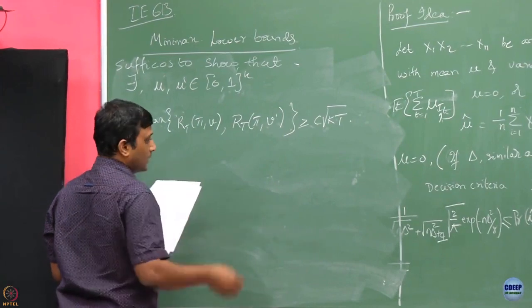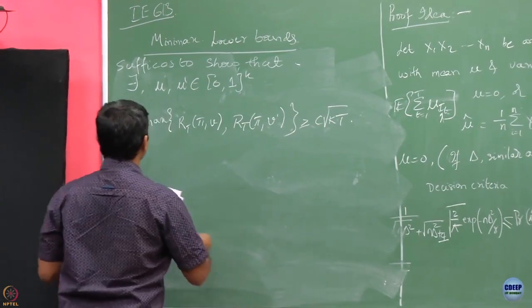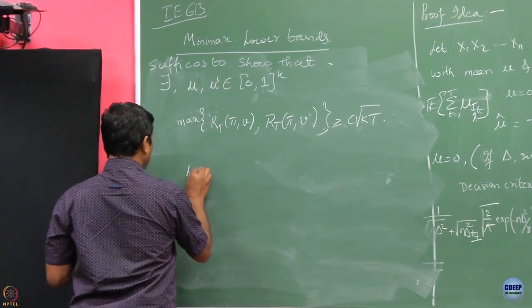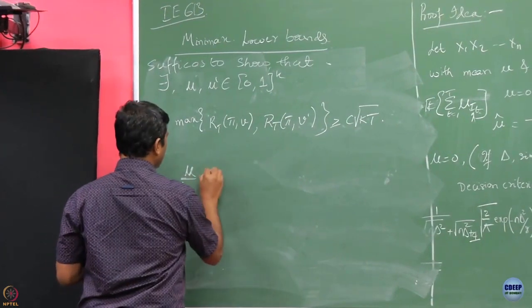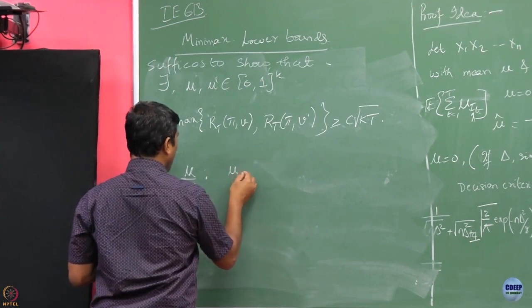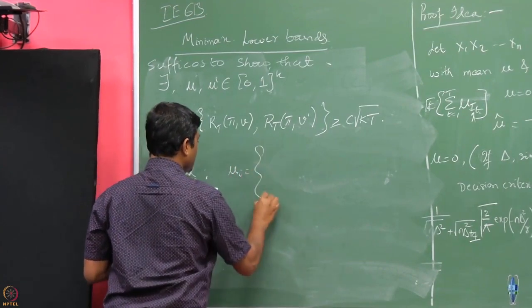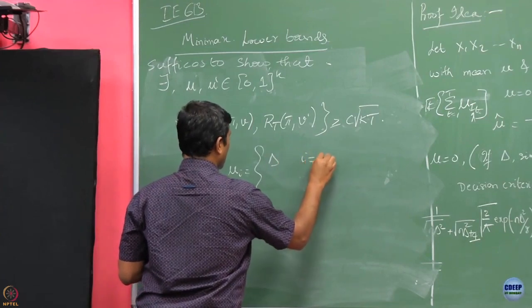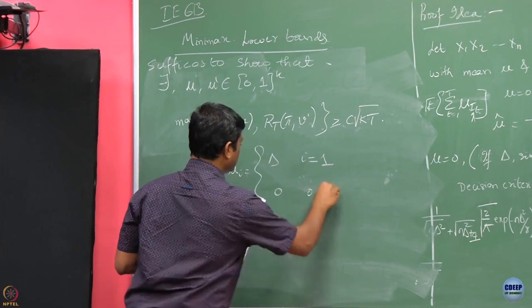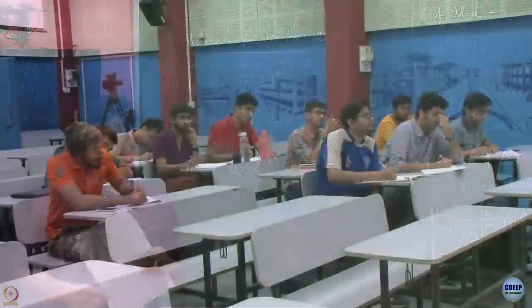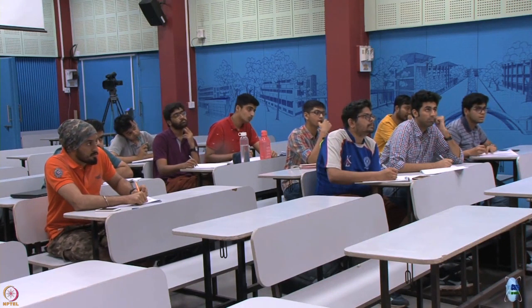For mu, I am going to set mu_i to be delta for i equals 1 and 0 otherwise. So in this example we are running through the Gaussian case, but we also said in the statement that it is sigma-Gaussian, so that should be fine.